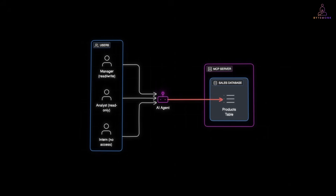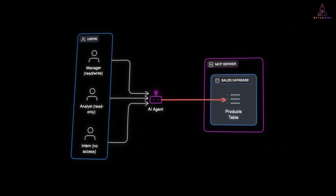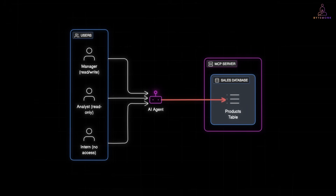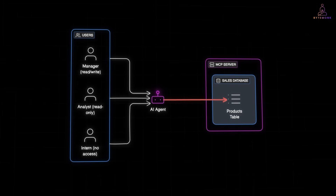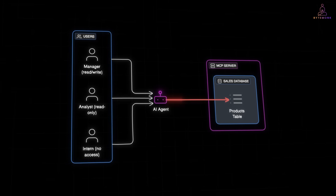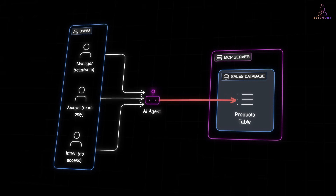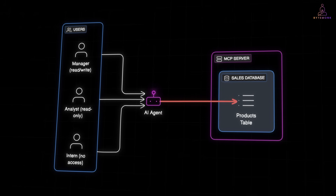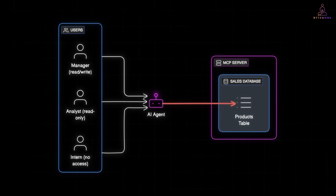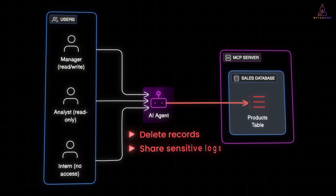MCP itself doesn't ask who is making this request and should they be allowed. If an AI agent is connected to your customer database, nothing in MCP prevents it from pulling every single record, not just the one it asked for. In many early deployments, engineers took the easy route: give the AI a database login or API key with broad access. But that means the AI has standing privileges far beyond what it really needs. One clever prompt injection and suddenly that same AI could expose salary tables, delete records or share sensitive logs.